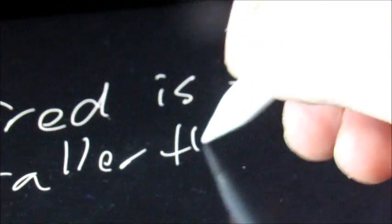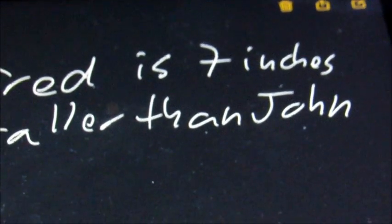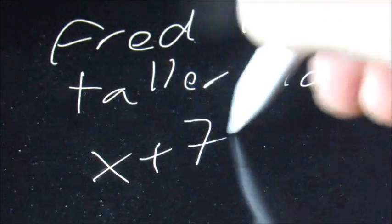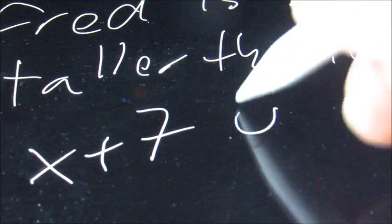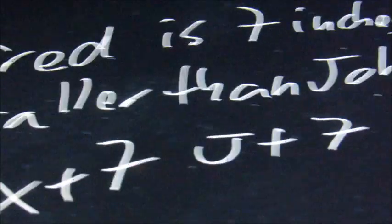Now we'll have some questions like: Fred is 7 inches taller than John, and we just have to write this as an expression. They'll probably say to use X for John, so we're going to say X plus 7 because he's 7 more than John. If they say to use a J, it would be J plus 7 — use whatever letter they tell you to use.